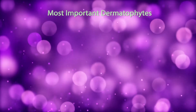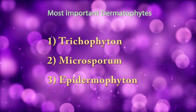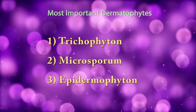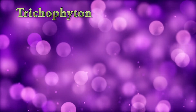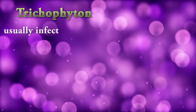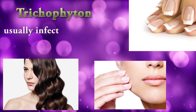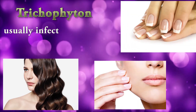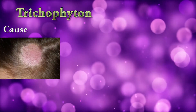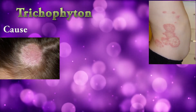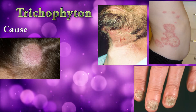The most important dermatophytes are classified in three genera: Trichophyton, Microsporum, and Epidermophyton. Trichophyton usually infects hair, skin, and nails, causing ringworm of the scalp, body, beard, nails, and athlete's foot.